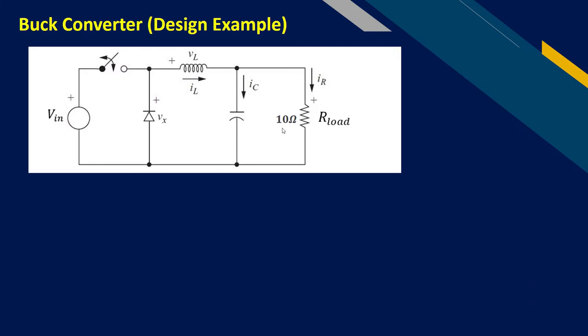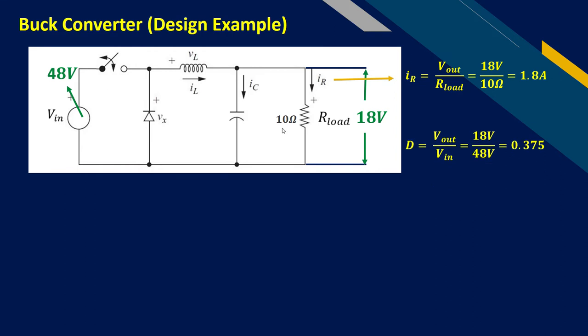Now let's take a design example. For example, the required output voltage is 18 volts while the supply voltages are 48 volts. And if we suppose the load is a 10 ohm resistor, then the load current can easily be determined using Ohm's law and it will be 1.8 amperes. As already discussed, the duty ratio is the ratio of output voltage to supply voltages. Thus, it will be 0.37.